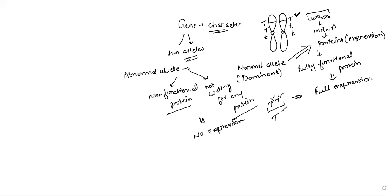The second situation is capital T, small t — one is a functional copy present and the second copy is a non-functional copy. Many times when we talk about law of dominance, we consider that this is enough for full expression. If single allele is dominant, 100% fully functional protein is responsible for the character.